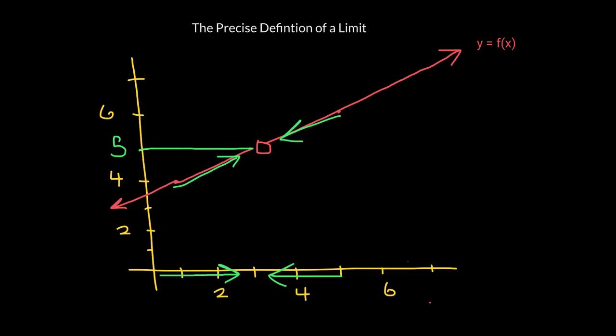In this case, the limit of our function as x approaches 3 actually exists and is equal to 5, although the function itself, f, is not defined at 3. Now I'm going to clear the board because I have a new question for you.